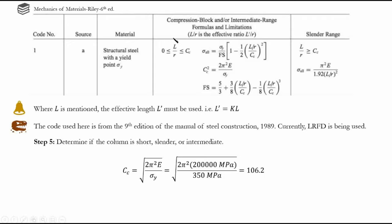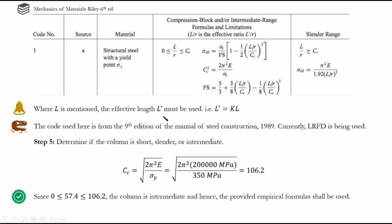Since 0 < λY = 57.4 ≤ CC = 106.2, our column falls in the intermediate range. We must use the intermediate column formulas from the code. After classifying the column, we find the factor of safety and then sigma allowable, and substitute back into our formula.